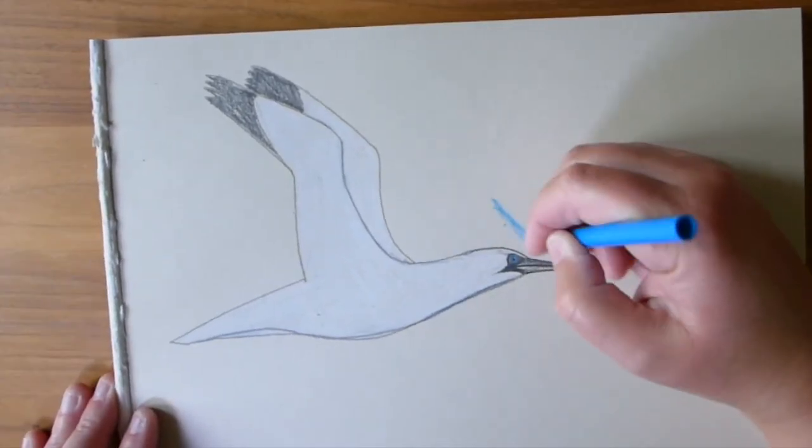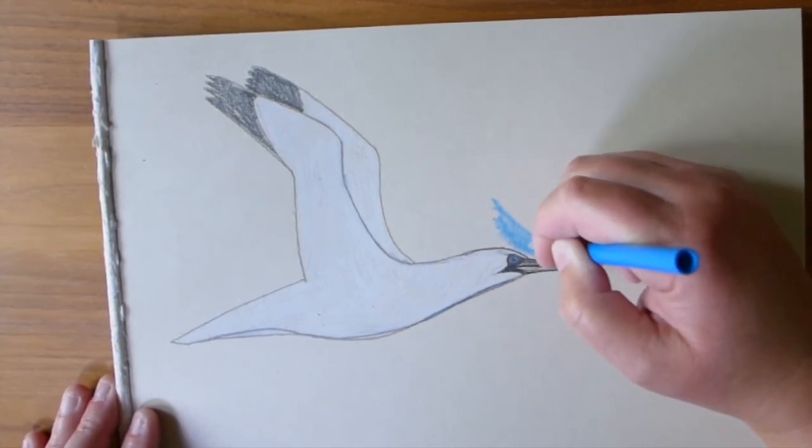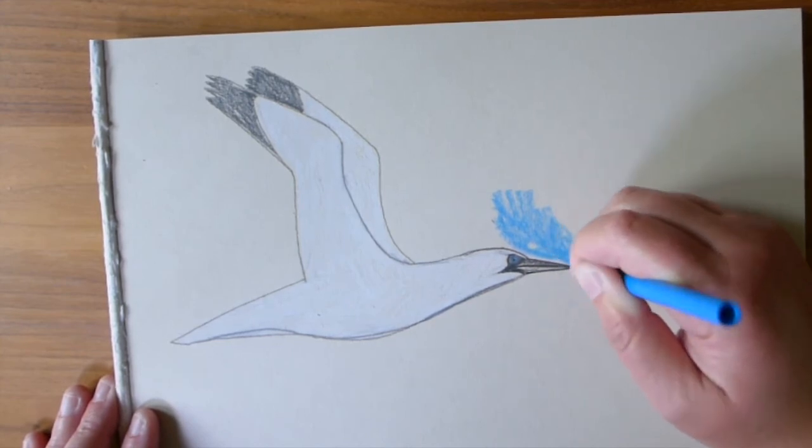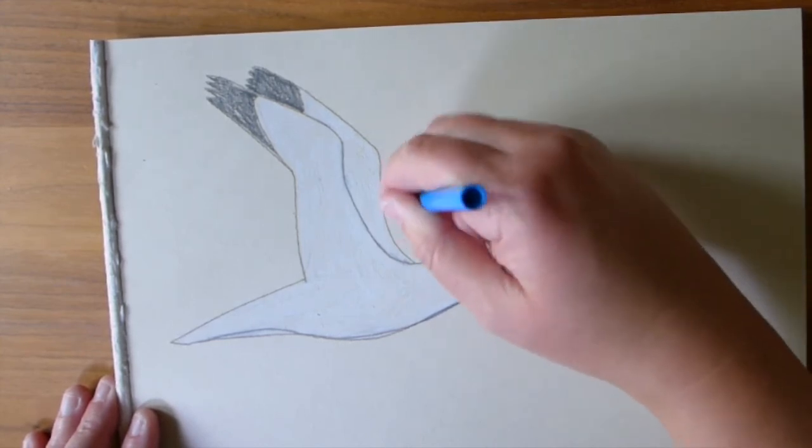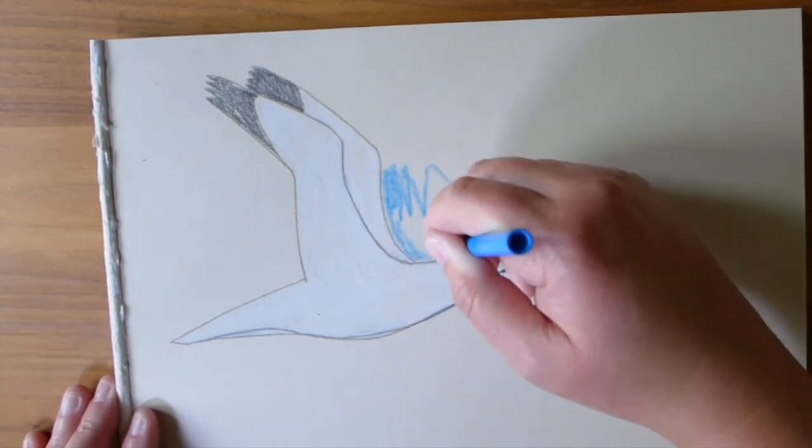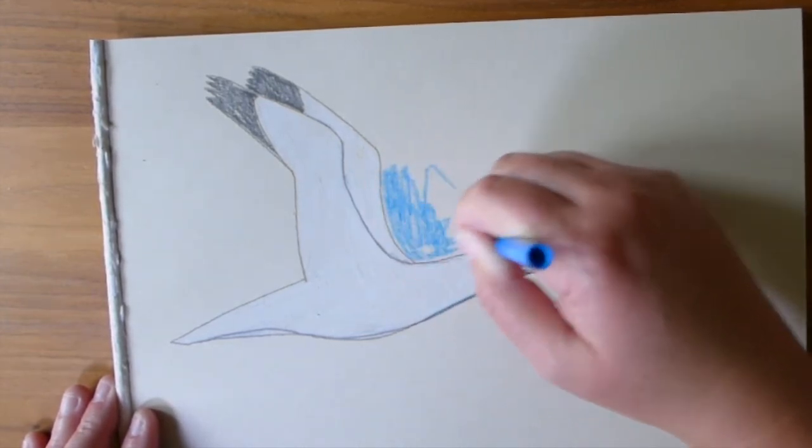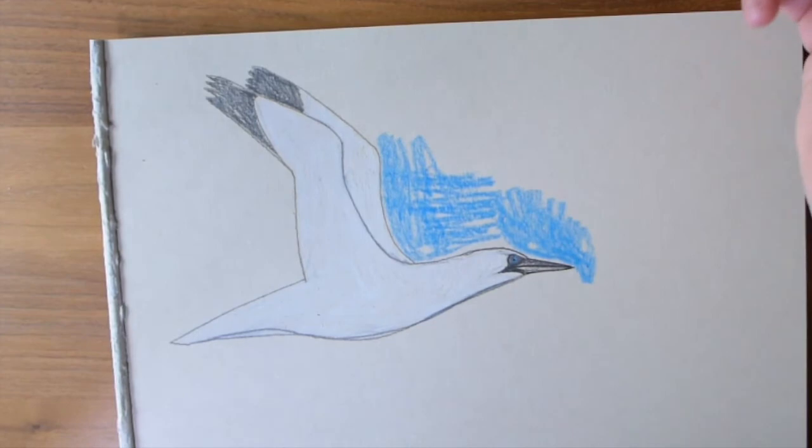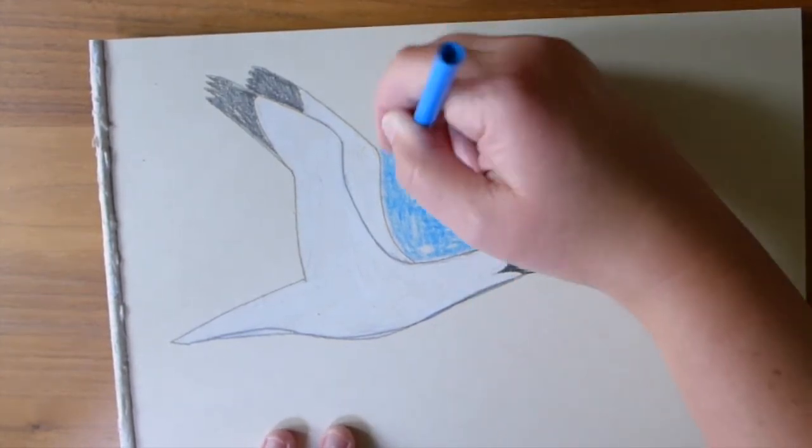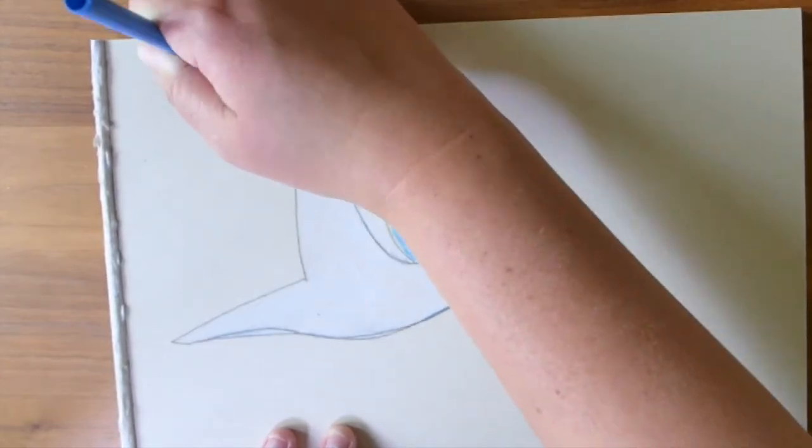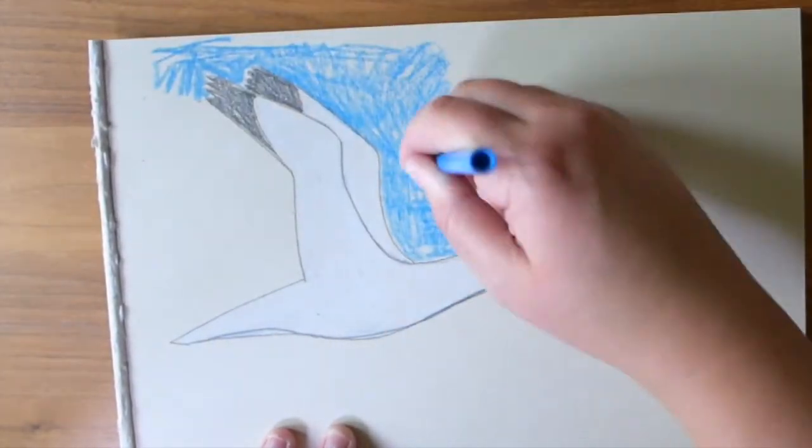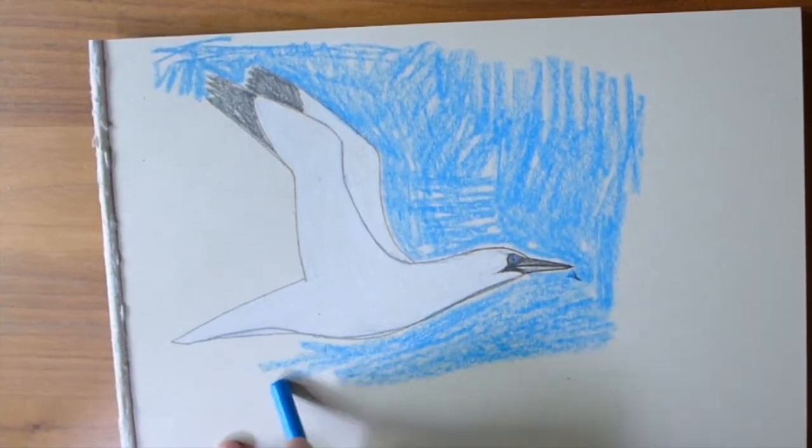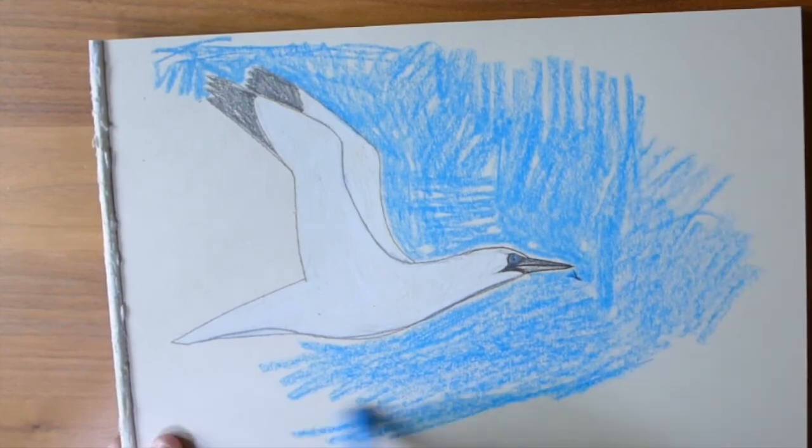Now you need your blue crayon and I'm going to start putting in the sky I like a bright blue sky but that doesn't mean to say that you have to have a bright blue sky for your picture and I think it's worth remembering as well that you don't always have to paint or draw your sky blue the sky can have lots of different colours it can be grey it can be blue it can be orange it can be pink it'll be lots of different colours so I'm using blue here but you don't need to use blue why don't you mix it up a bit try a different colour I'm just speeding this bit up.